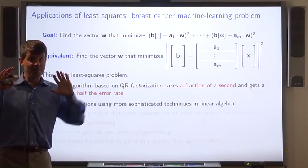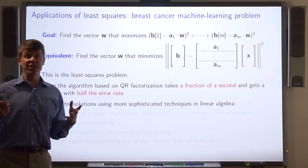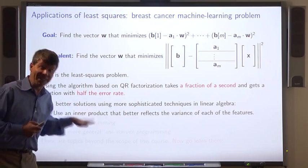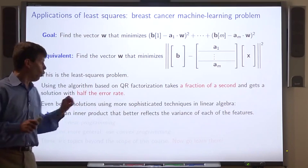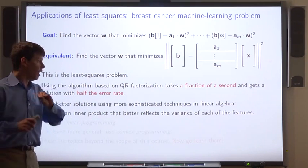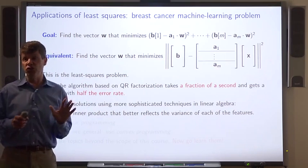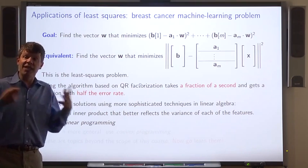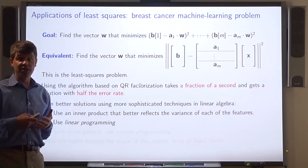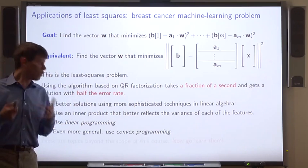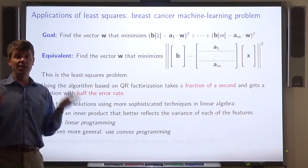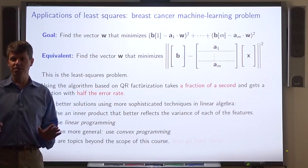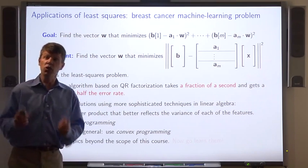Now, this is just the very beginning of machine learning. You can use a lot more sophisticated methods to get even better solutions, such as using a different inner product, not the dot product. An inner product that reflects the variance of the various features. You can use linear programming to optimize a slightly different cost function, a slightly different loss function. You can even use convex programming to minimize some more sophisticated loss functions. All of this is beyond the scope of this course. But now you have the ingredients, so you can go learn it.